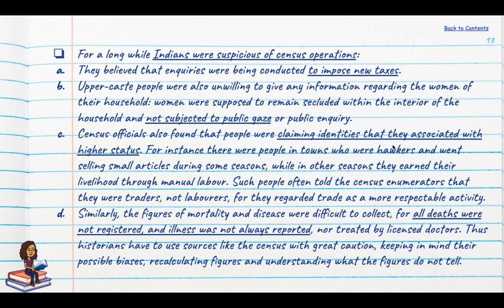Figures of mortality and disease were also difficult to collect because not all deaths were registered and all illnesses were not reported. Most people went to local Ayurvedic or Unani doctors rather than licensed medical professionals. Historians therefore have to use sources like the census with great caution — keeping in mind possible biases, recalculating figures and looking behind the numbers to see what they are not really telling us.